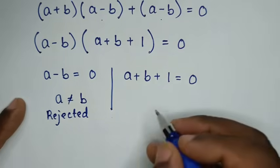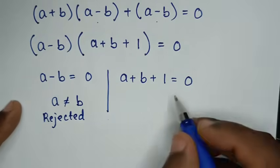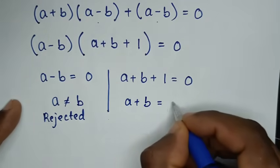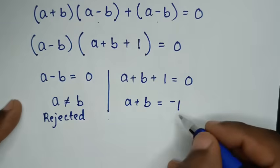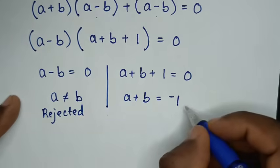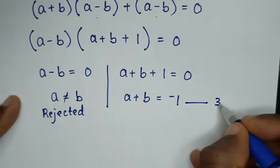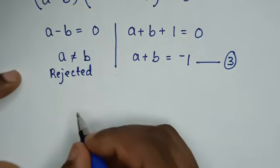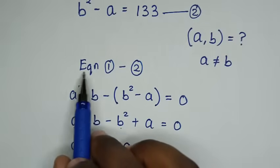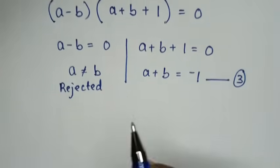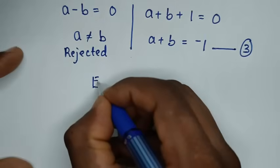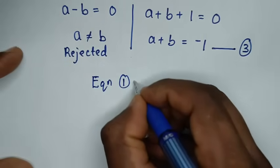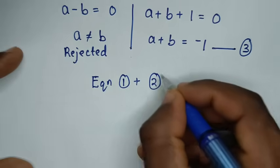From the second solution, a plus b plus 1 equals 0, which gives a plus b equals negative 1. We call this Equation 3. In the next step, we will take Equation 1 plus Equation 2.